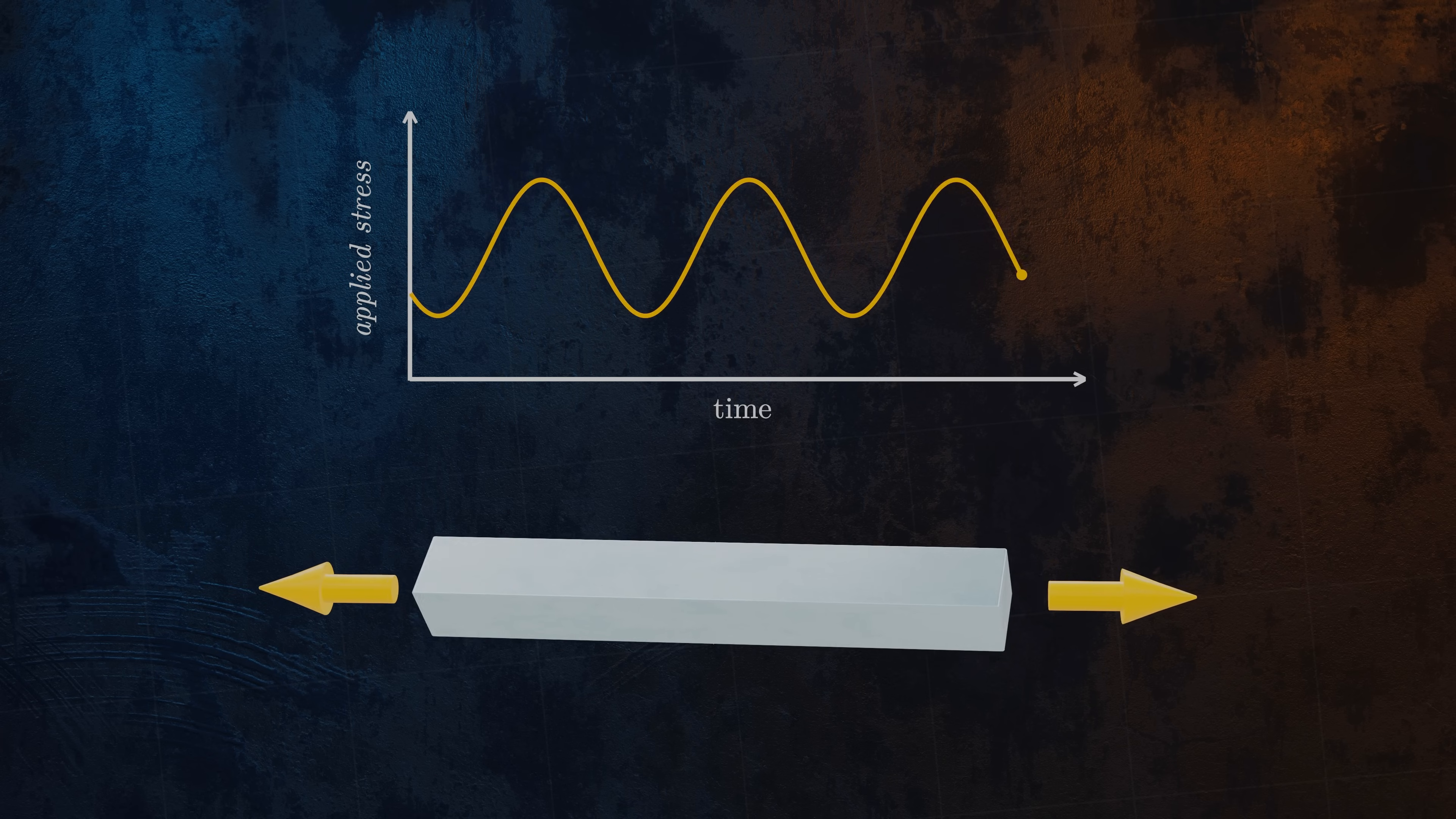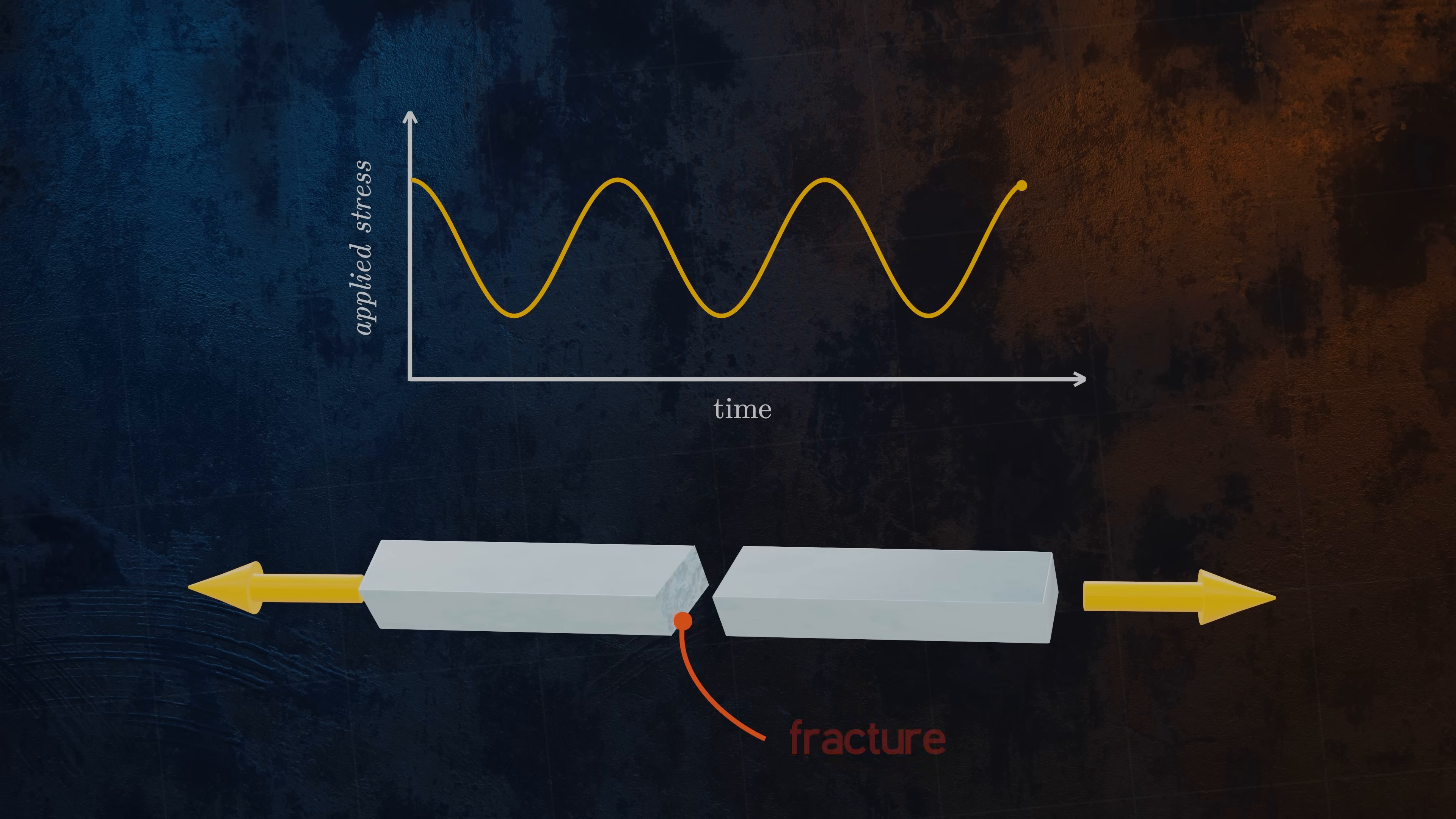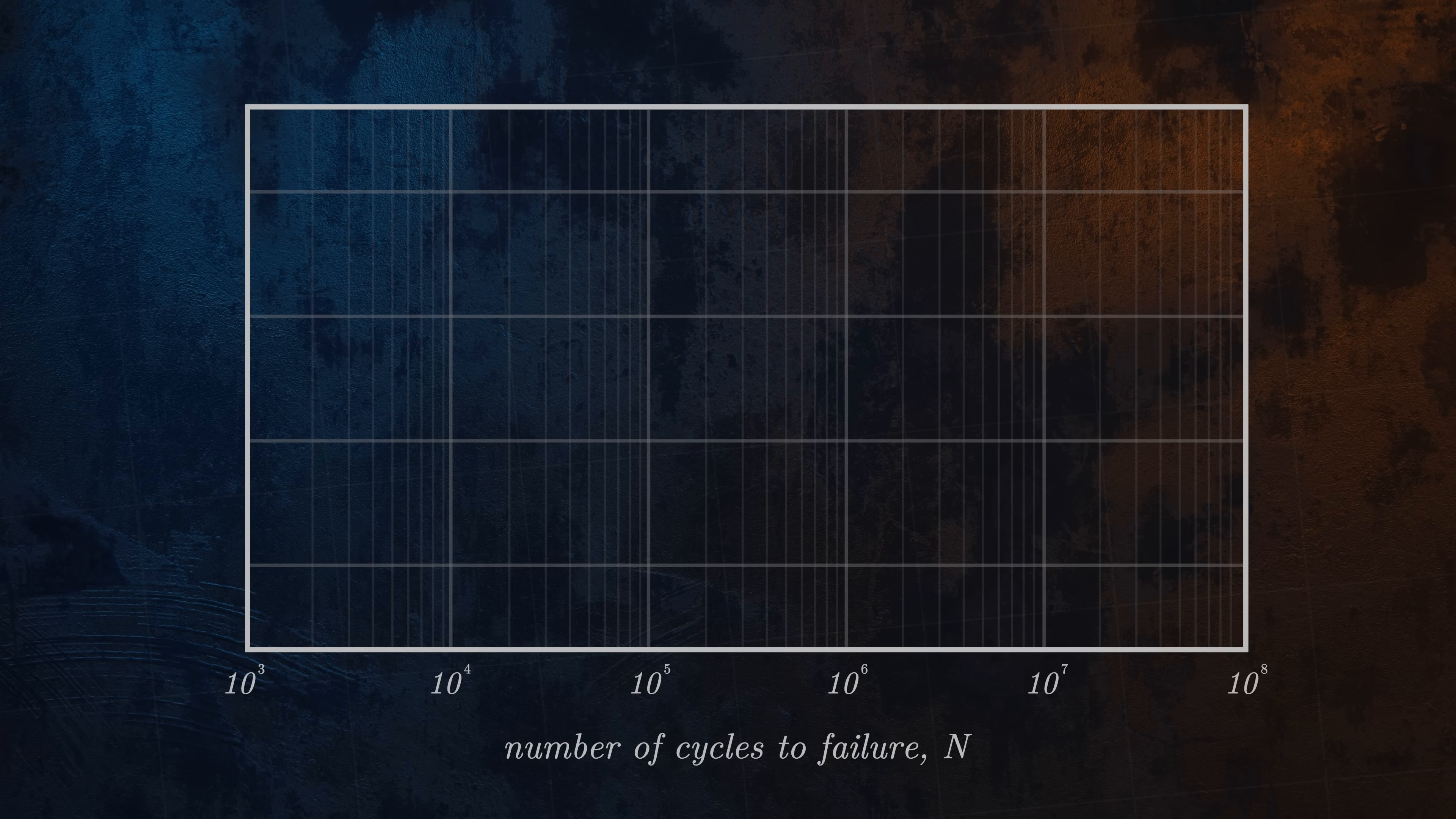If we repeat this test a large number of times with different applied stress ranges, we can plot the results on a graph, with the number of cycles to failure N on the horizontal axis and the applied stress range S on the vertical axis. Because the number of cycles to failure can be very large, a log scale is usually used for the horizontal axis. By fitting a curve to the data points, we obtain what is known as an S-N curve. The S-N curve allows you to calculate the number of cycles until a component is likely to fail for a given stress range.